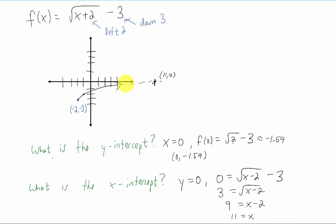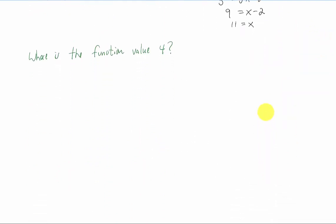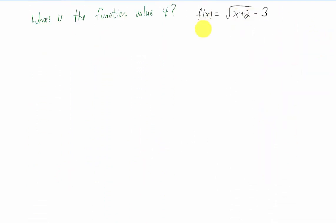Then we might be curious as to when this function will actually reach, say, the value 4. It's going to be way over here somewhere. So we might ask the question, where is the function value equal to 4? Well, there's our function right there. I just copied it down. And we're going to set that function value equal to 4.